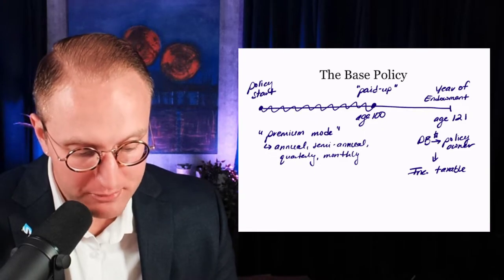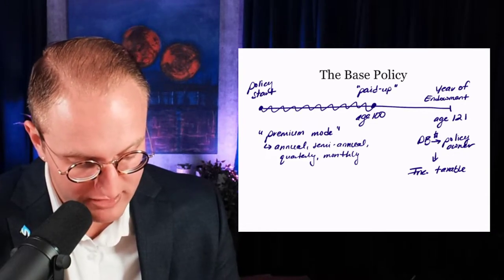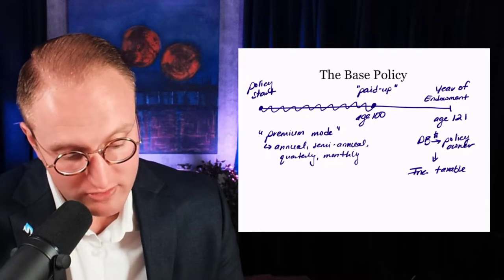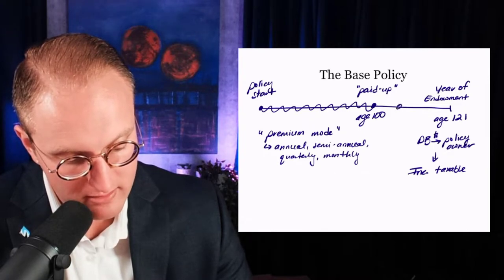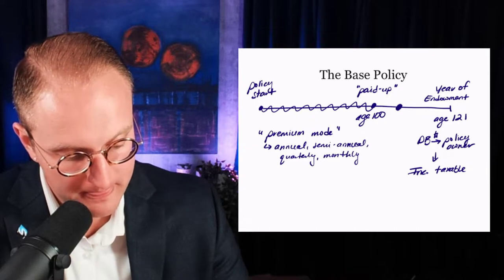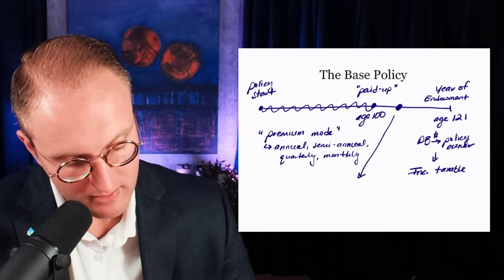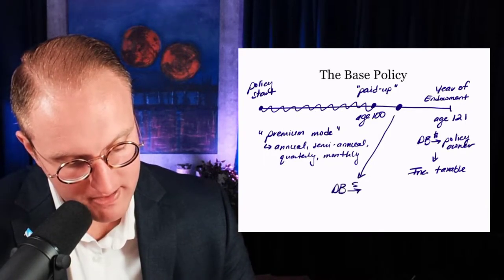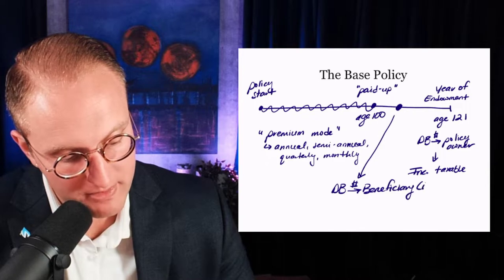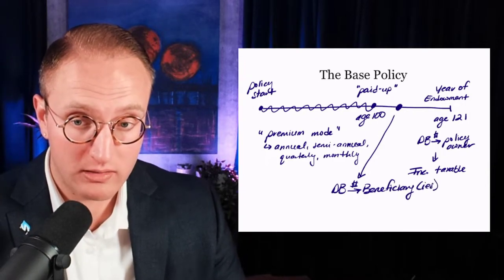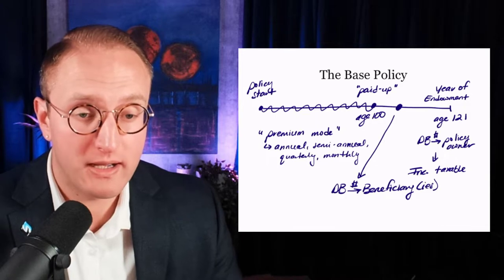Base premium is paid at a premium mode across the schedule from policy start to age 100, when in this example the initial death benefit is paid up. If the policy owner were to pass away after age 100 but before age 121, death benefit would be paid to what we call a beneficiary. There may be more than one beneficiary, and you can split the death benefit across parties by percentages.